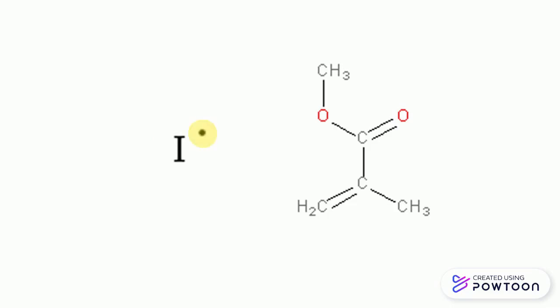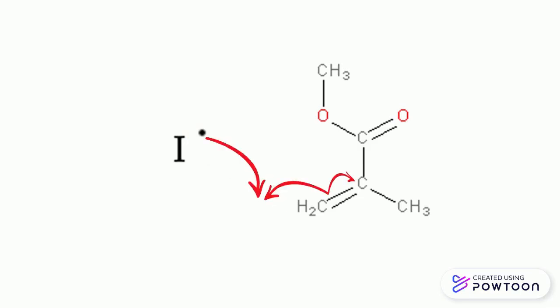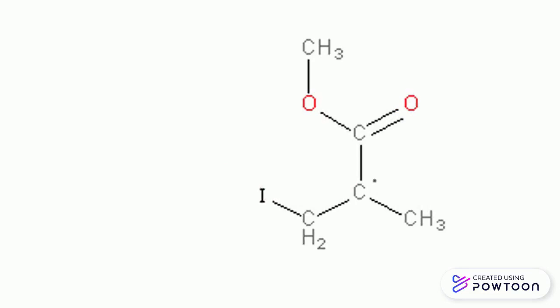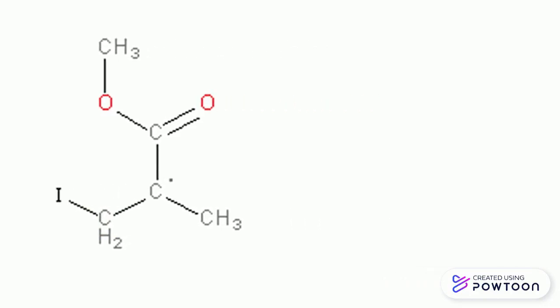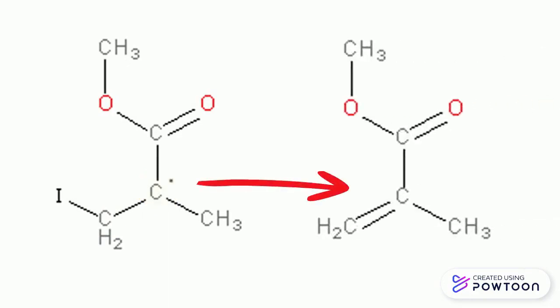The initiator has a single unpaired electron, which is super unstable. This means it really wants to form a bond and become stable. This initiator will break the double bond, which allows for both carbons to accept another bond. The leftmost carbon will bond with the initiator, though this will not impact the polymer much. But the central carbon will now have an unpaired electron, just like the initiator did, so now it is unstable and wants to bond with other monomer units.